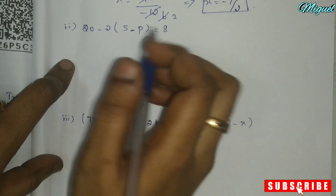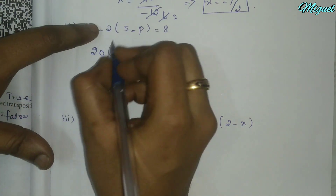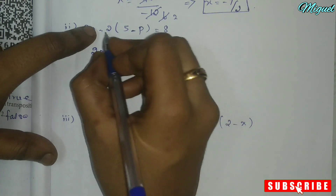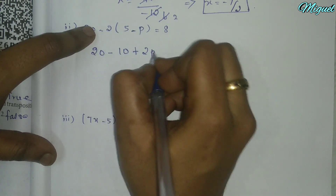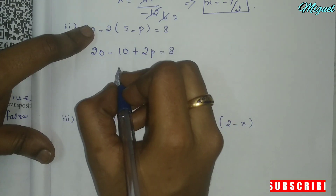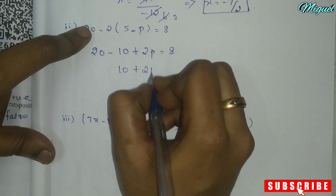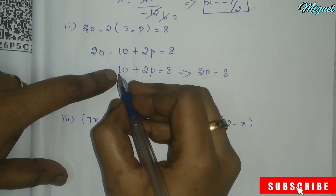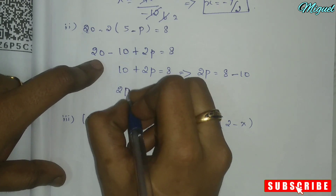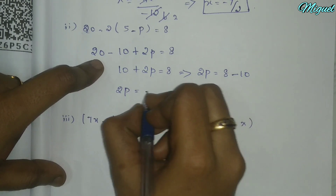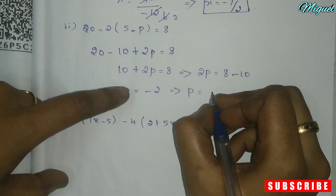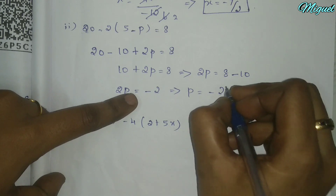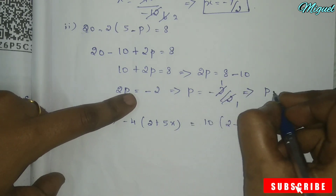Next, solving for p: minus 10 minus minus gives plus, so 2p equals 8. Then 20 minus 10 is 10, plus 2p equals 8. So 2p equals 8 minus 10 equals minus 2. Dividing both sides by 2: p equals minus 1.